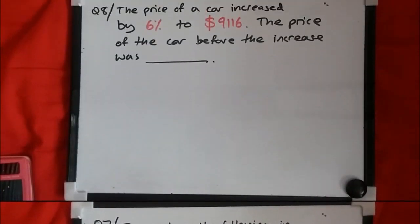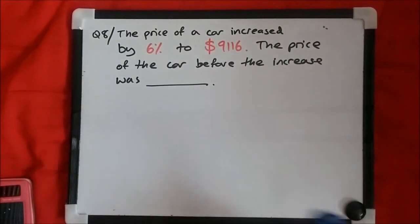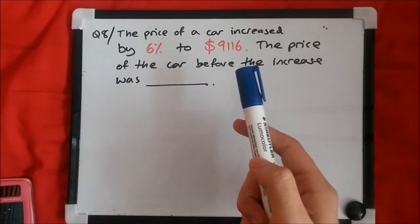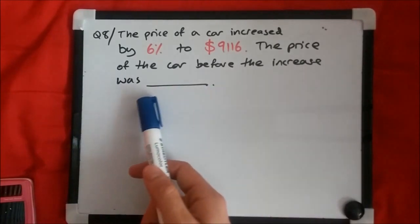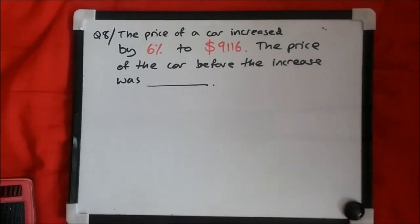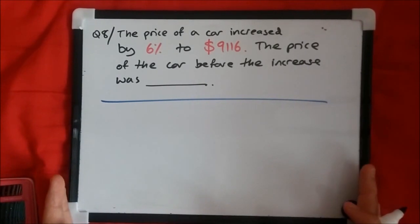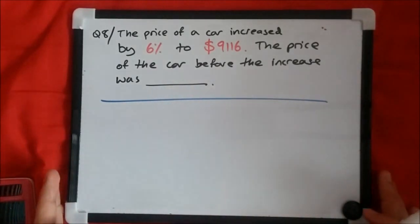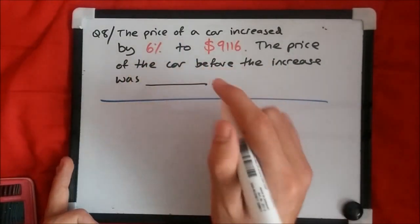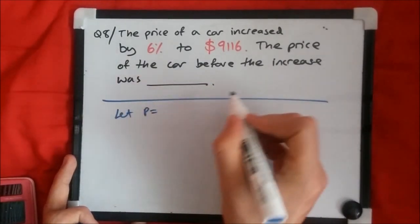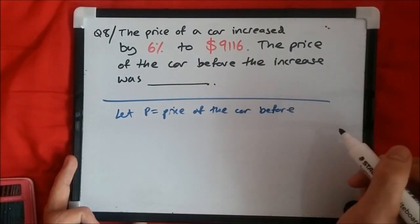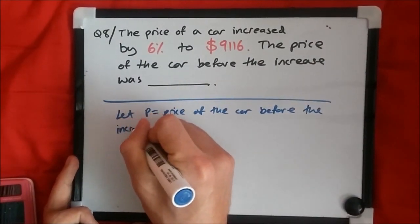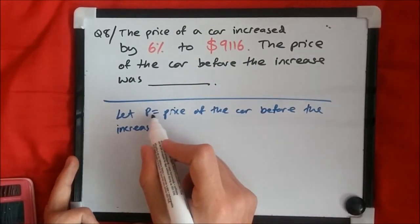Let's move on to question 8. The question tells us that the price of a car increased by 6 percent to $9,116. We need to find the price of the car before the increase. The best way to understand this is to write an algebraic equation that directly explains it. Let p be the price of the car before the increase.